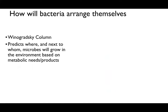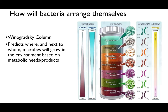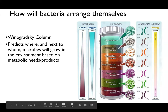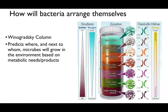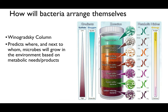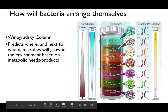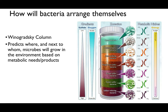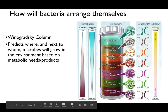One fun thing we can look at is how bacteria physically arrange themselves in environments. This can actually be demonstrated in the laboratory using what's called a Winogradsky column, which predicts where and next to whom bacteria will grow. Hydrogen sulfide is high at the bottom and very low at the top. We can see different bacteria growing along the way: cyanobacteria coupled with heterotrophic bacteria at the top, then iron-oxidizing bacteria, purple sulfur bacteria, green sulfur bacteria, and finally sulfate-reducing bacteria at the bottom.